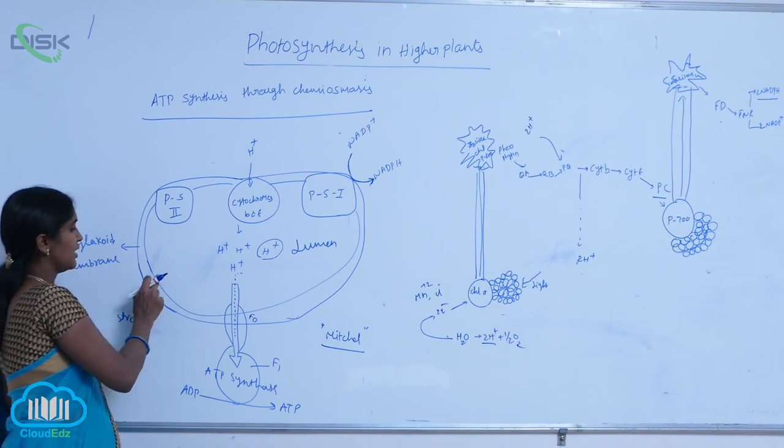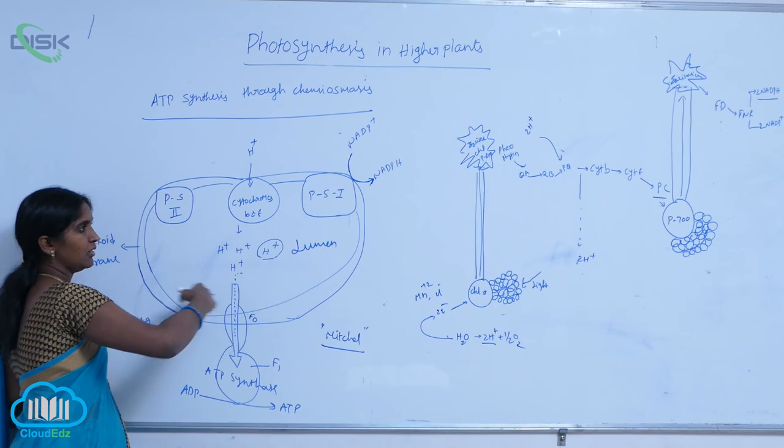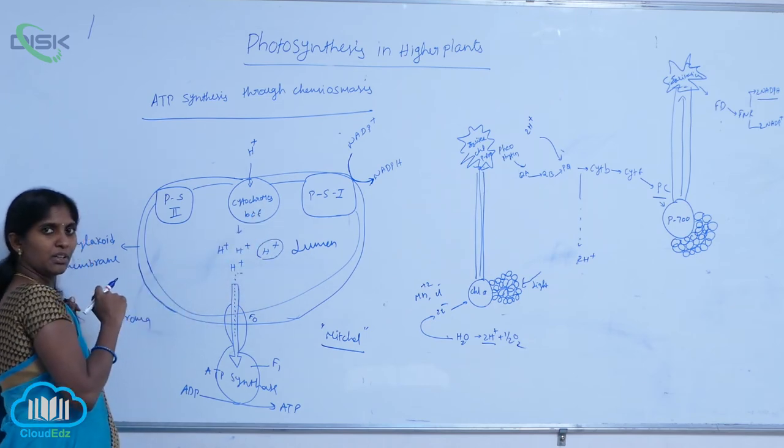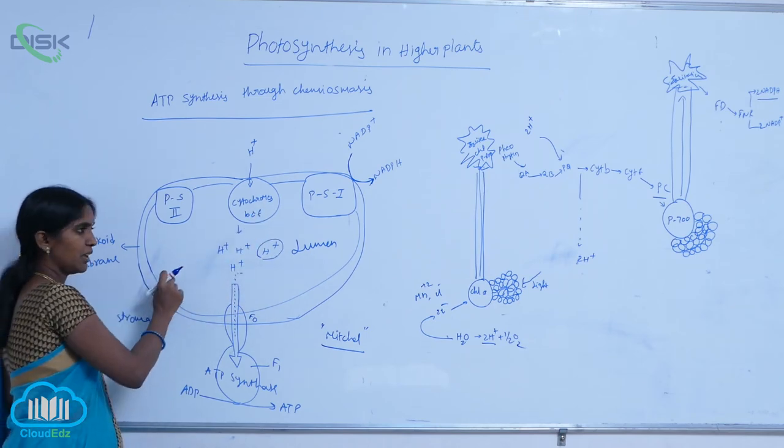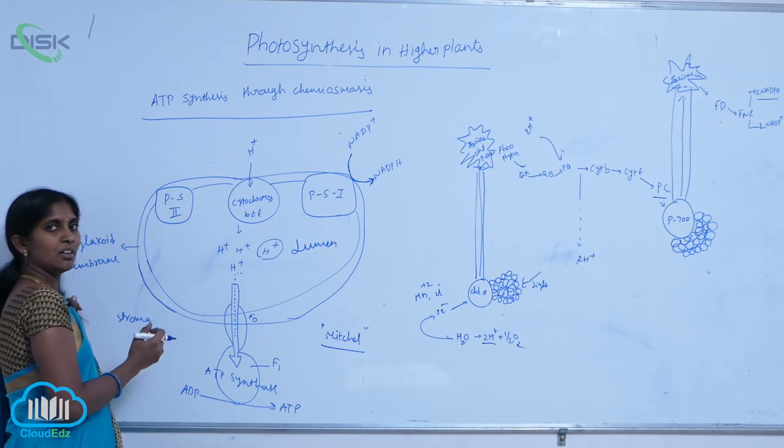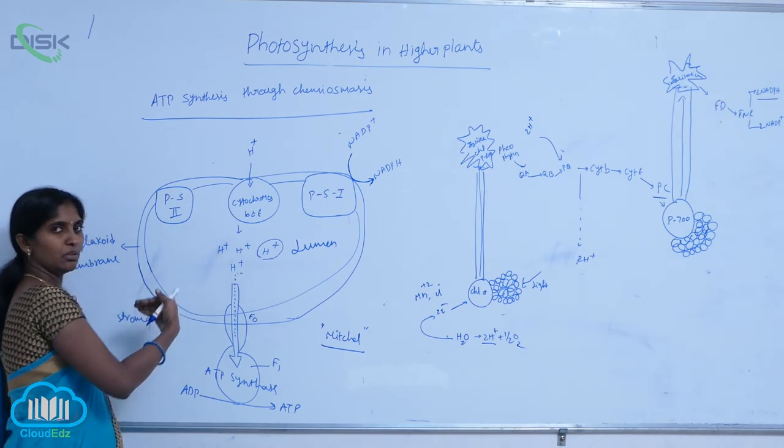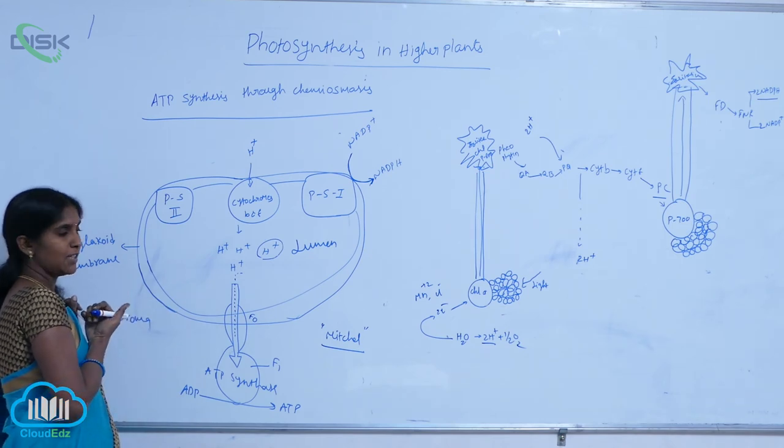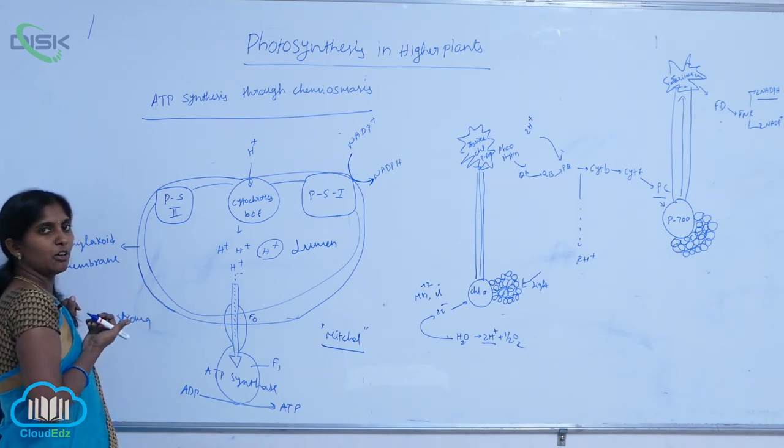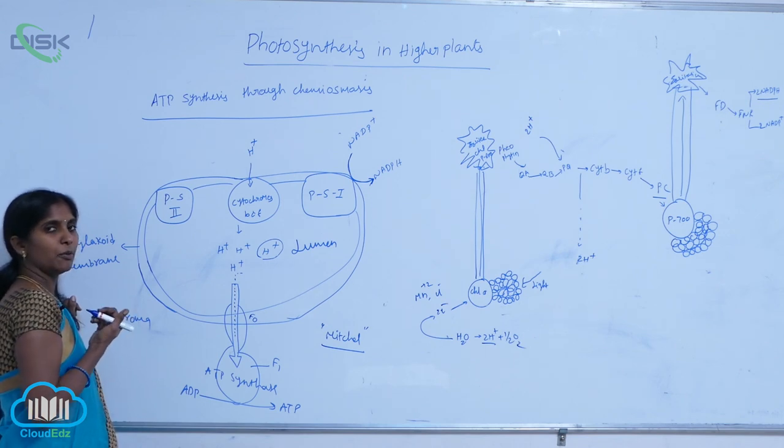The thylakoid membrane is impermeable, meaning protons cannot be transmitted from the lumen to stroma through the membrane. This impermeability is crucial for maintaining the proton gradient.